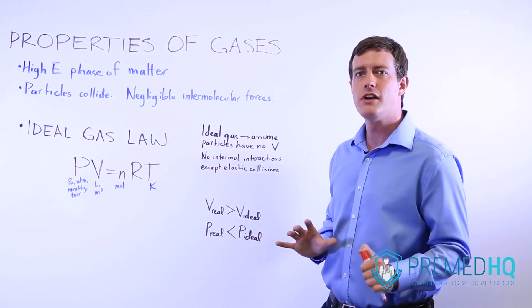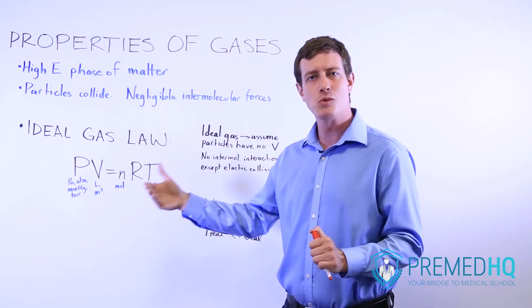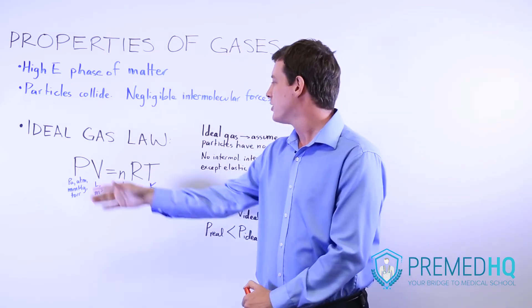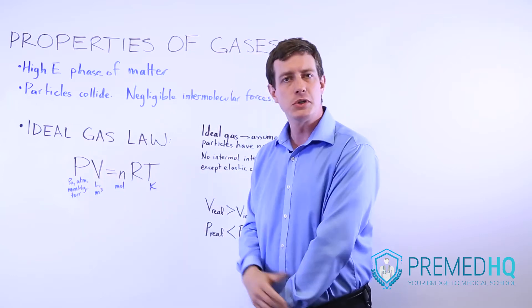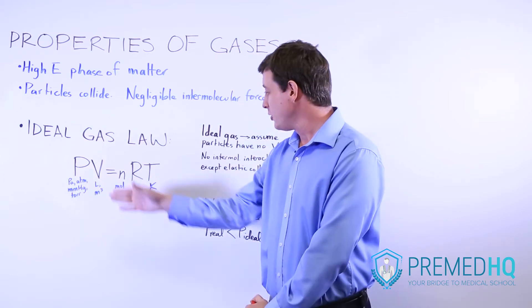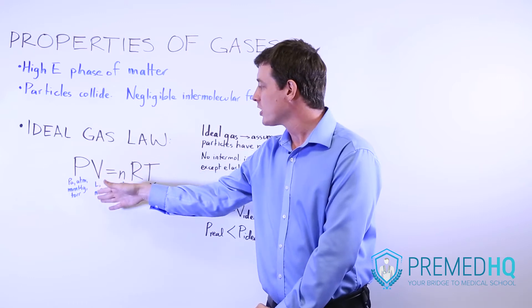The units for these can vary depending on what you're provided when you're working through a question. You might see pressure measured in pascals, atmospheres, millimeters of mercury, or torr. Volume could be expressed as liters or cubic meters.